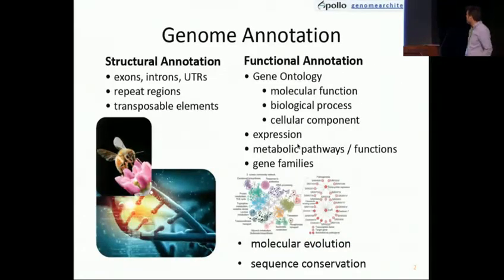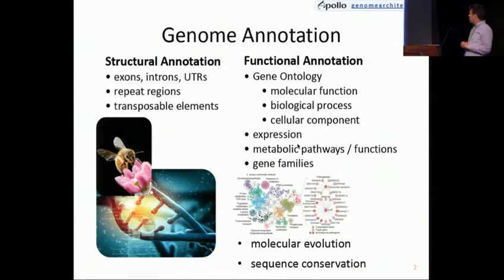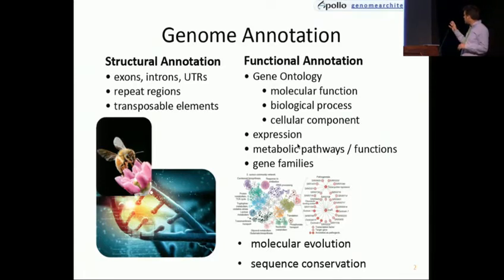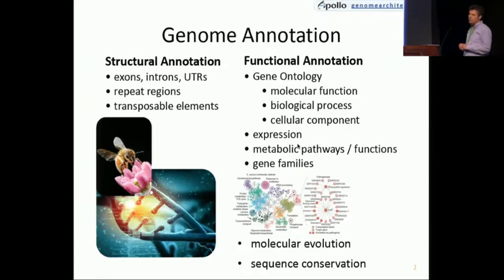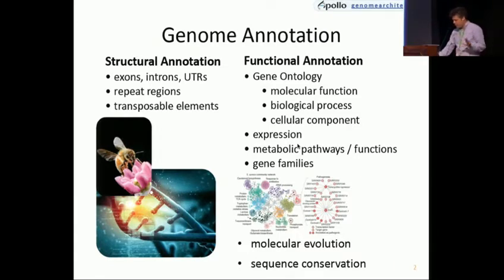Let's start with the definition we use for genome annotation. We tend to think about it split into two sides: structural annotation — features, their type, where they're located — and functional annotations — what they do, what pathways they're involved in, what gene families they belong to, and how their sequence is conserved over time and across organisms.